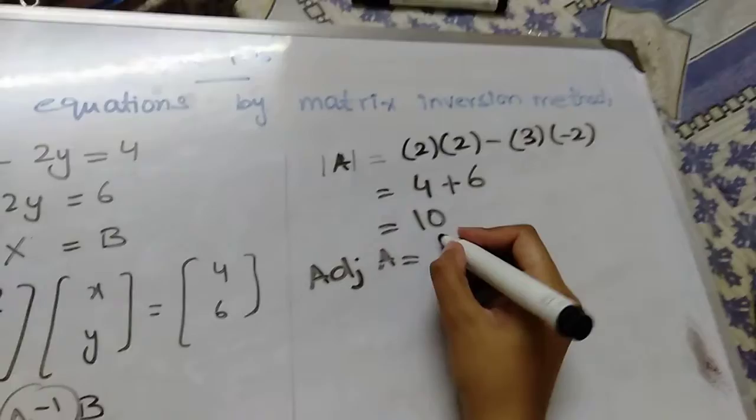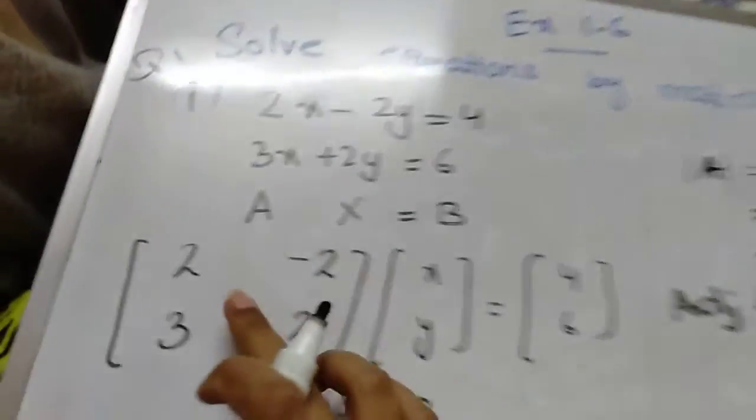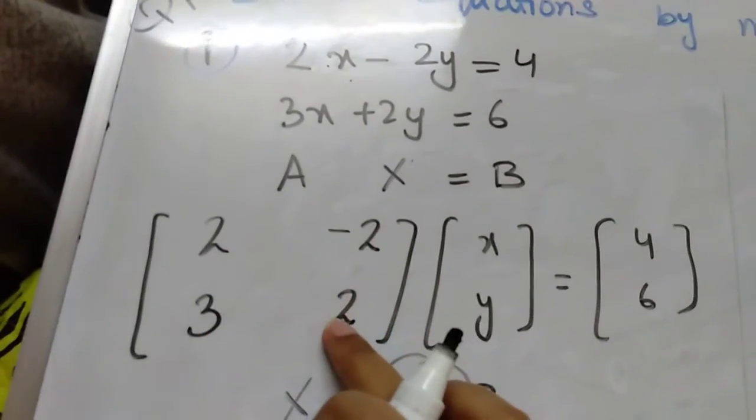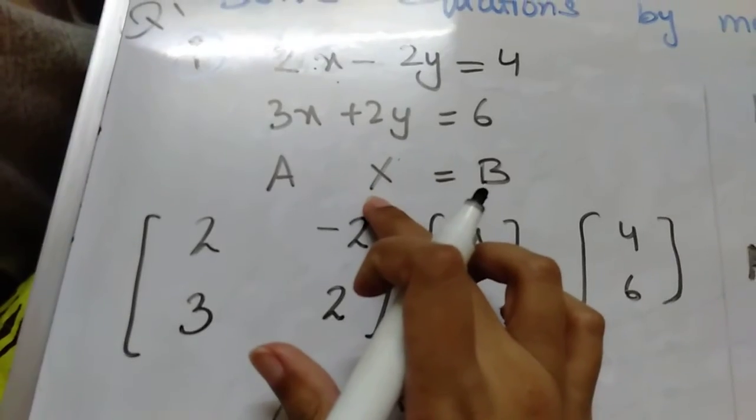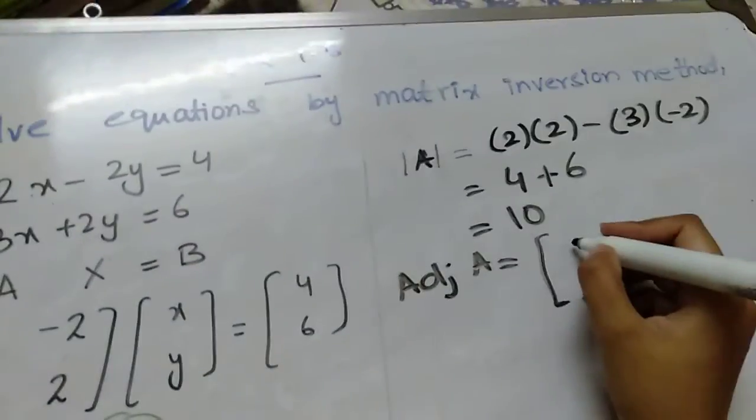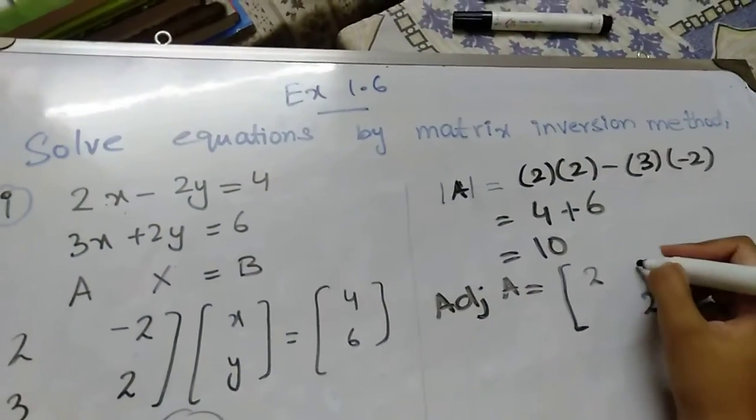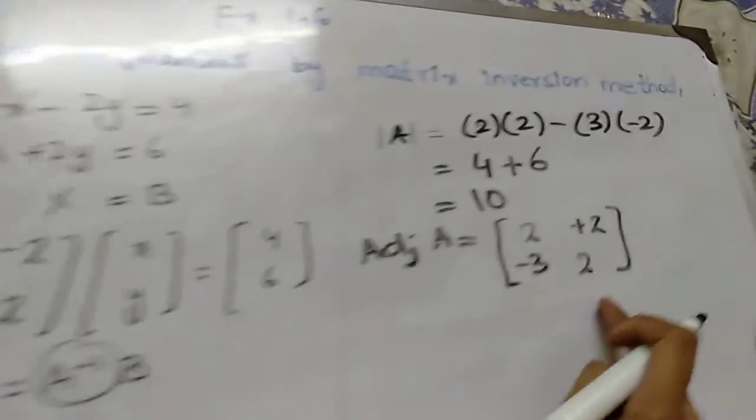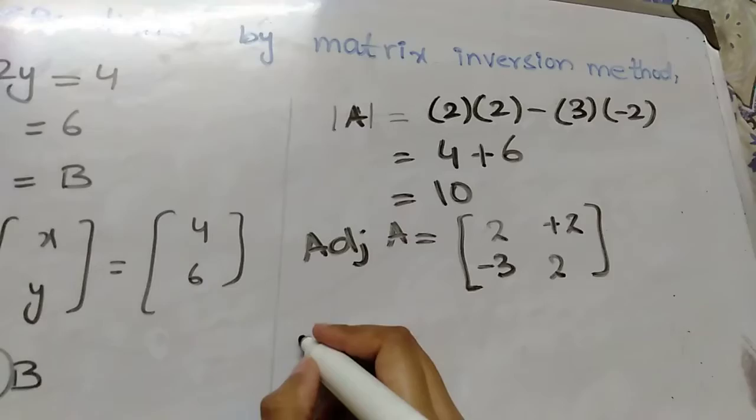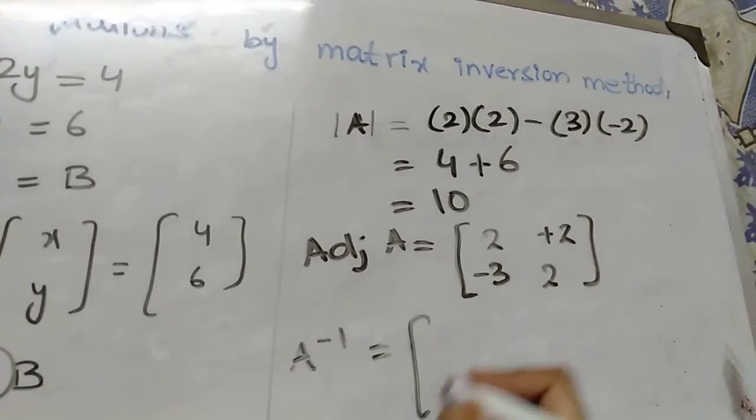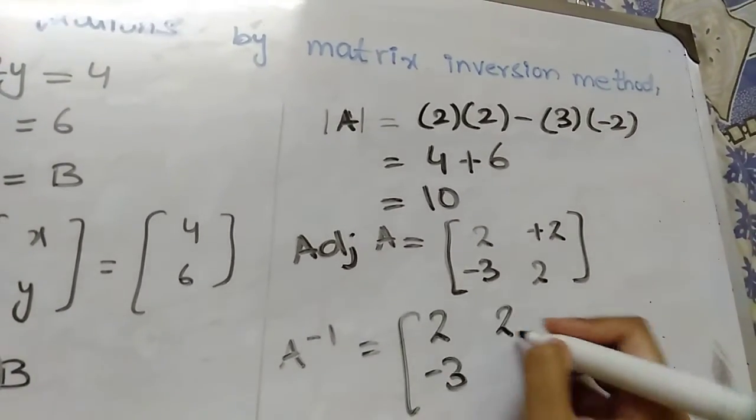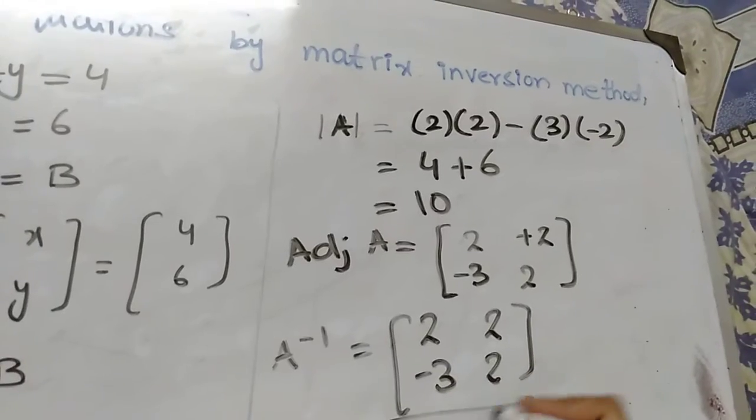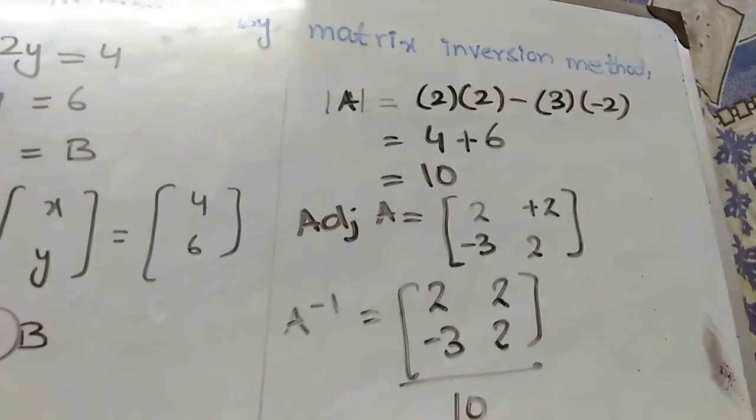Now we will find adjoint of A. As we know, we have to change the places of these terms and change the signs of these terms. So it will be 2 and 2, plus 2 and minus 3. This will be adjoint. Now we will find A inverse: it will be 2, minus 3, 2, and 2 divided by 10.